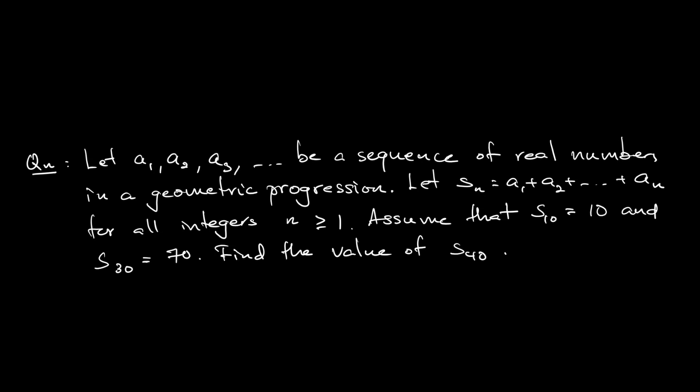Assume that S10 equals 10, so a1 plus a2 all the way until a10 equals 10. And S30 equals 70, so a1 plus a2 all the way until a30 equals 70. The question asks to find the value of S40.